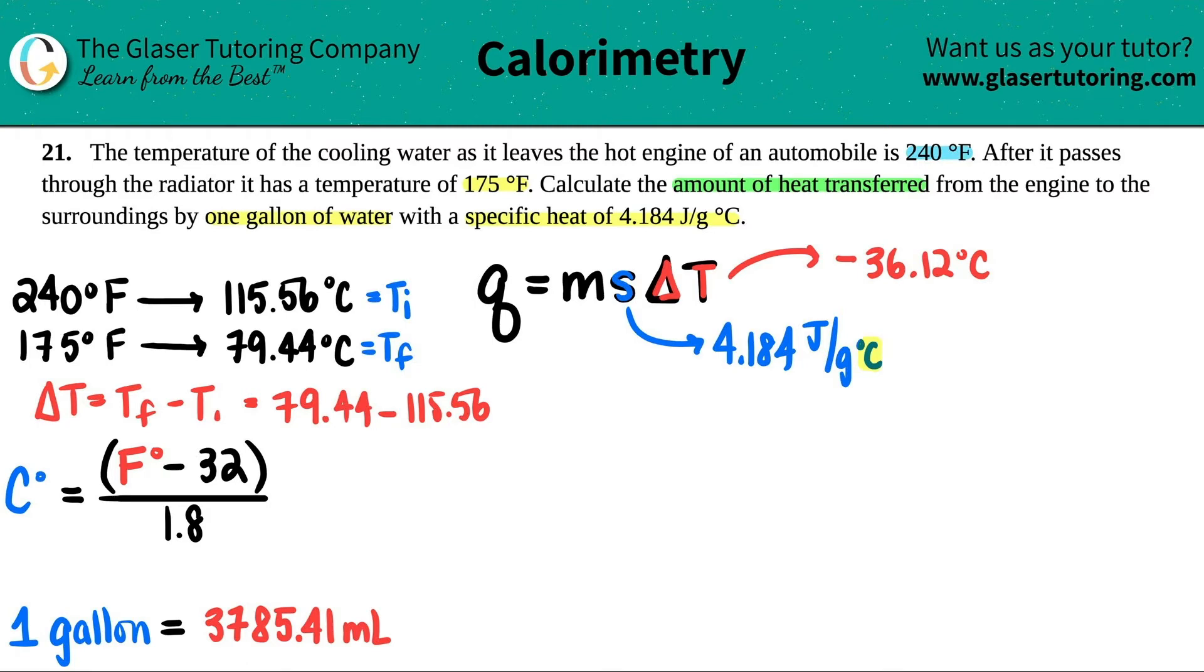Now I'm coming over to the M, which stands for mass. They told us that we had one gallon of water. That's a volume. But when I use this formula, I need to have this in grams, that's the standard unit for Q equals ms delta T. So I just gave a quick little conversion down here.